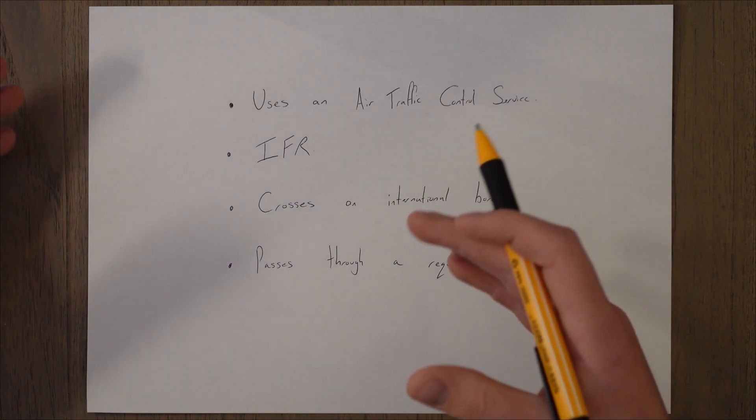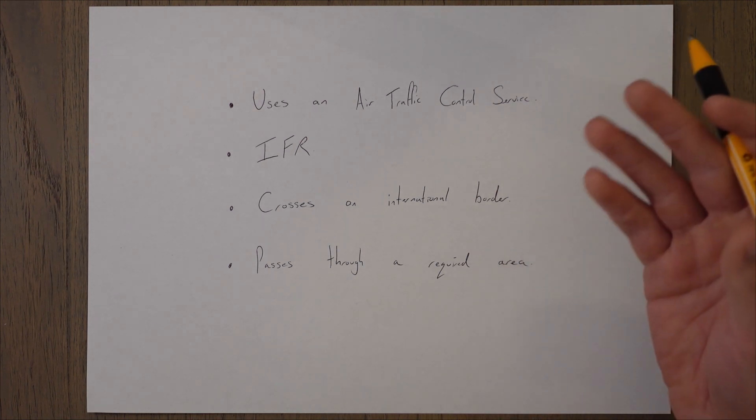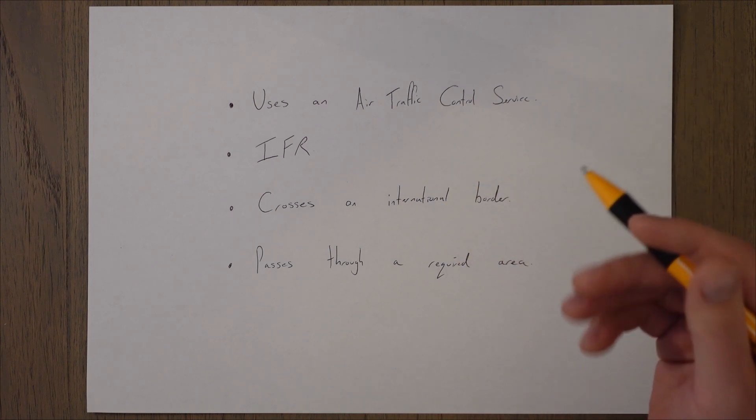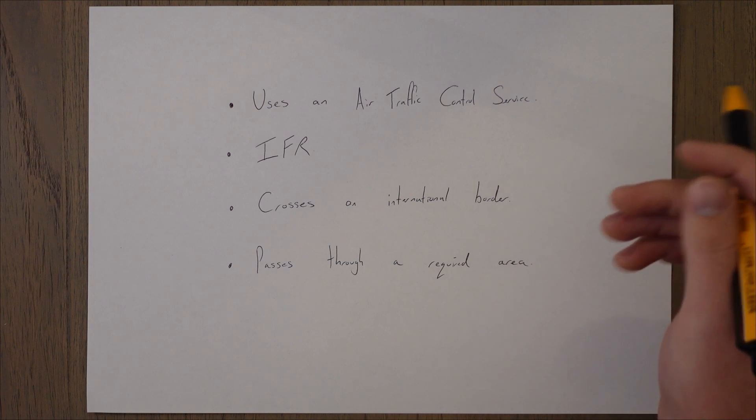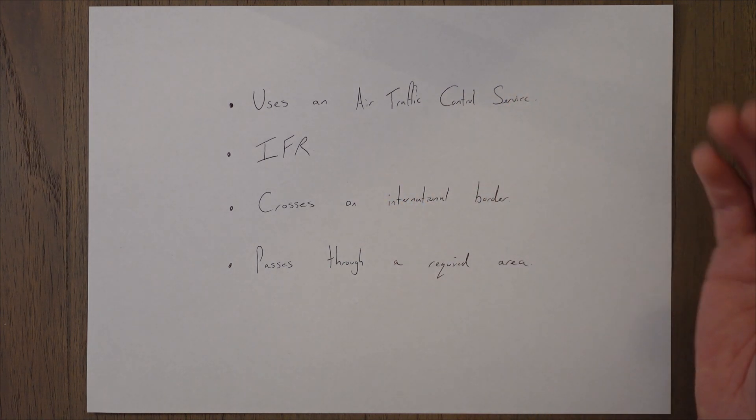Or if the flight plan passes through a required area, so this is something maybe like an area that's close to a military airfield. They want to know if you're going to be flying near there so that when an aircraft appears on radar for that military airbase they don't shoot you down basically. They know that you're planned to be there and you're supposed to be there.